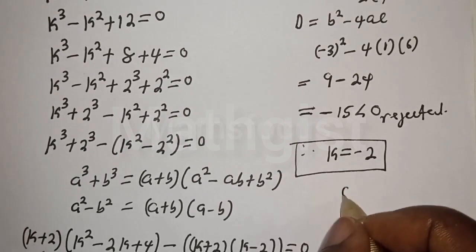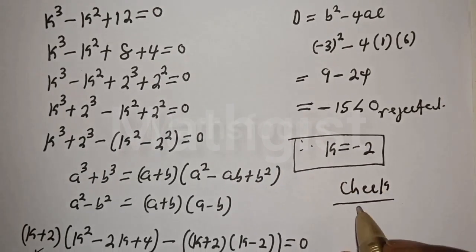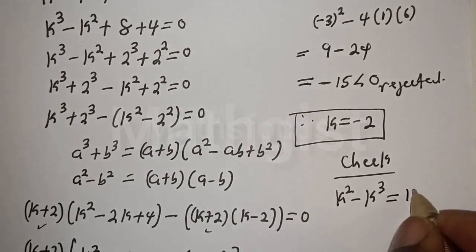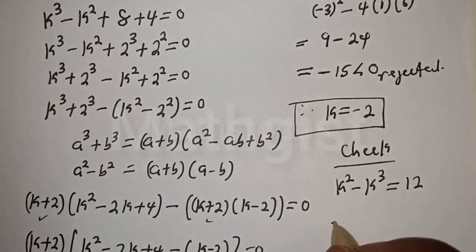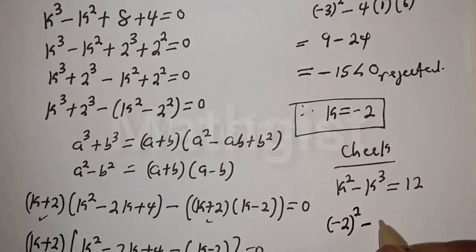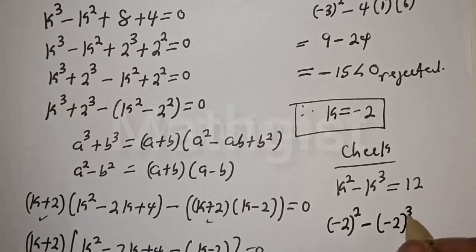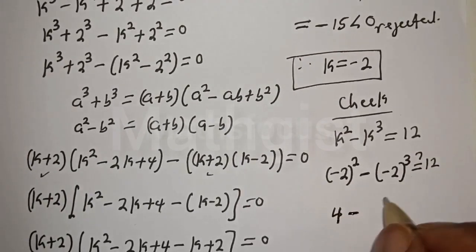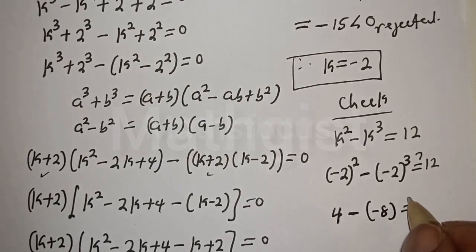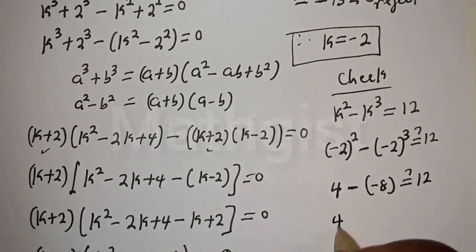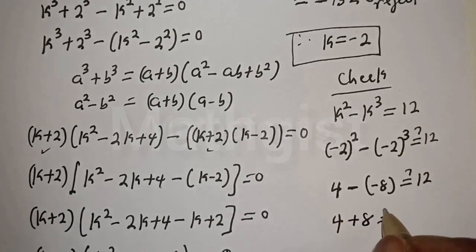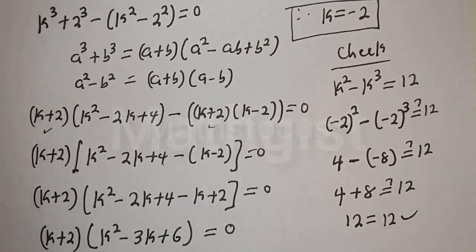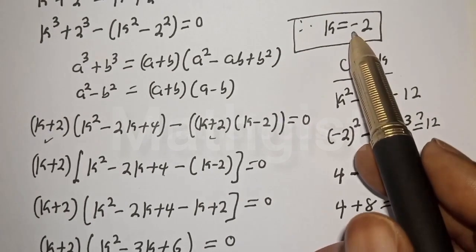Let's verify: the given equation is k squared minus k raised to power 3 equals 12. When k equals minus 2: (minus 2) squared minus (minus 2) raised to power 3 must equal 12. That gives 4 minus (minus 8), which is 4 plus 8, equals 12. The equation is satisfied at k equals minus 2.